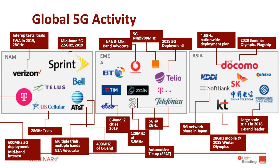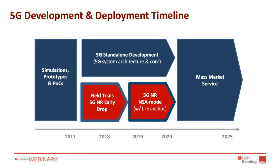In terms of getting to a deployment and commercial launch timeline, I still think we're talking 2020 onward for mass market, generally available devices — particularly smartphones with both 4G and 5G. We will see some earlier launches, but probably not really at scale.